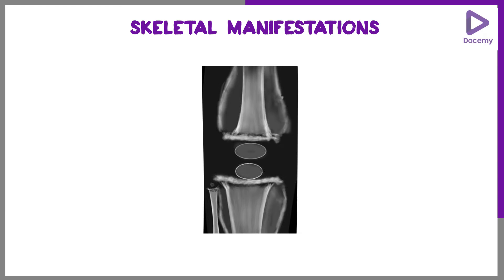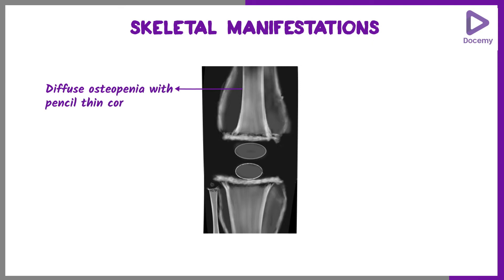The skeletal manifestations in scurvy on X-ray will show diffuse osteopenia with a pencil-thin cortex, and the matrix will show a ground glass appearance, known as the ground glass matrix.